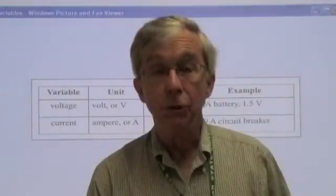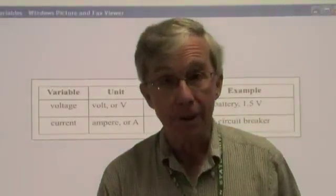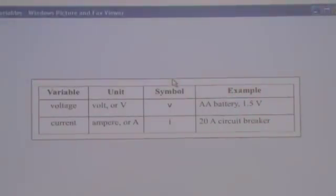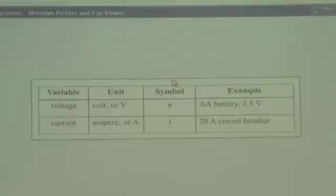The symbols and units associated with current and voltage are summarized on this table. For voltage, the unit is Volt in honor of Volta, and it's abbreviated with capital V. The symbol, as we've already seen on the circuit drawing, is also the letter V. For current, the English word to describe the motion or flow of charge, the units are Ampere in honor of Ampere's early work. The abbreviation is capital A. And the symbol is also from Ampere's early work. It's for the French word for intensity.